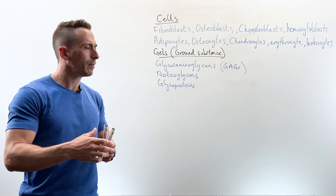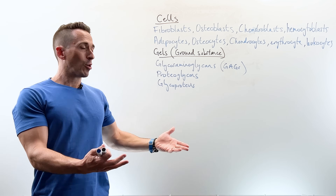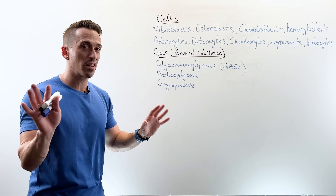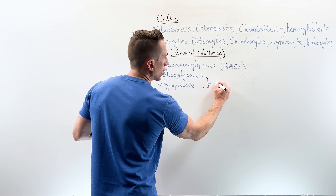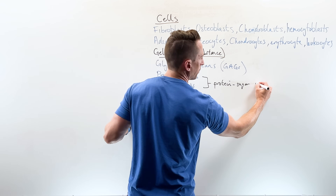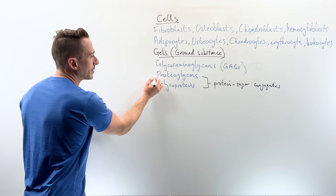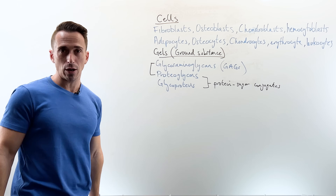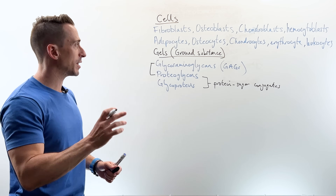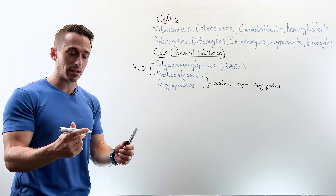Proteoglycans are protein-sugar conjugates and glycoproteins are sugar-protein conjugates — one has more protein than sugar, the other more sugar than protein. Proteoglycans bind to glycosaminoglycans, and together they become very hydrophilic — they love water. Water binding to these two creates the bulk of that connective tissue environment. Glycosaminoglycans are polysaccharides — big long sugar molecules — and examples include hyaluronic acid, chondroitin sulfate, and heparin sulfate.